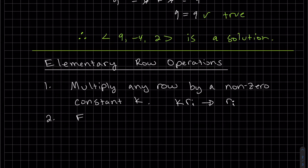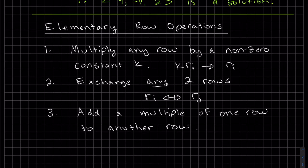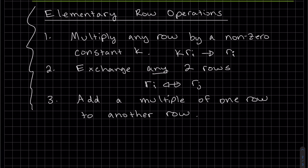We can exchange any two rows, written as Ri can be exchanged with Rj. And our third one: we can add a multiple of one row to another row. You can go K times one row and add it to any other row, and then we will make it the jth row.